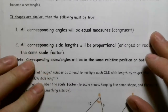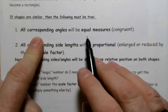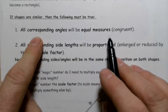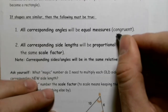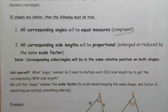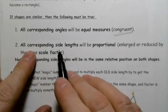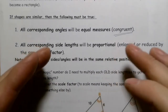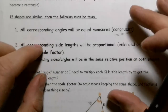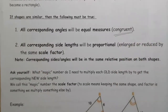If the shapes are similar, then all corresponding angles will be equal — congruent, meaning they have the same measure. And all corresponding side lengths will be proportional: if one side is twice as big going from the original to the new one, then every other side is also twice as big, multiplied by the same factor.